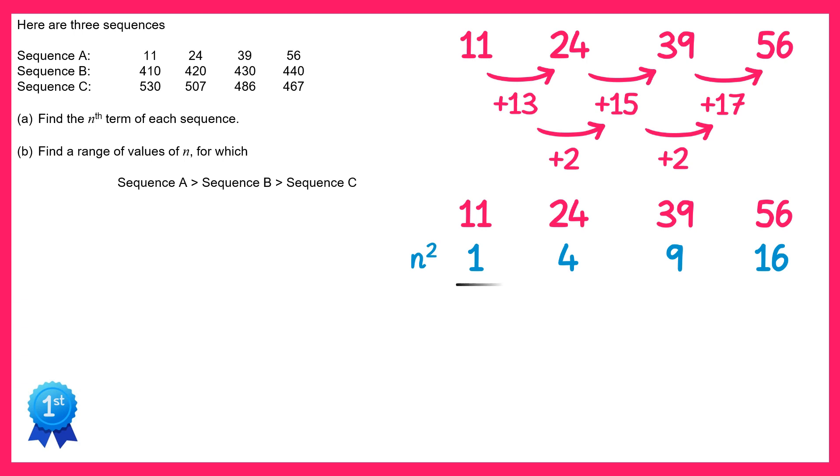Now we subtract n squared from our sequence. So 11 take away 1, that's 10; 24 take 4, that's 20; 39 take 9, that's 30; 56 take 16, that's 40.